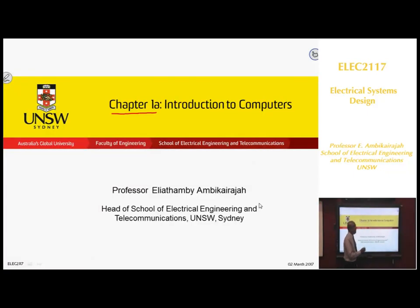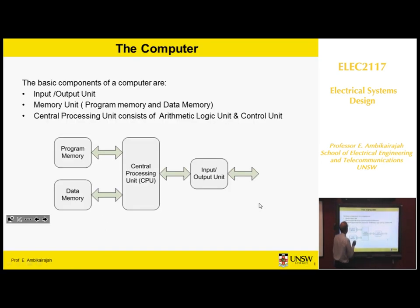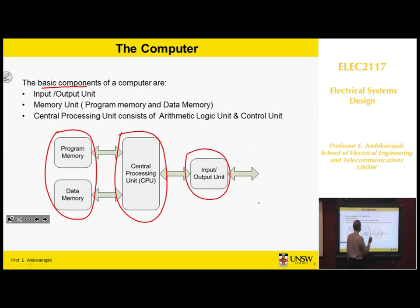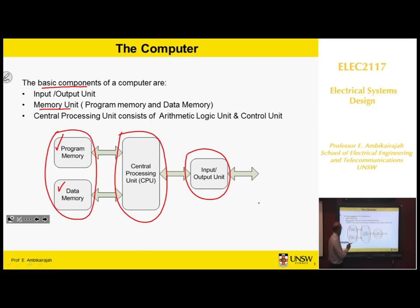Chapter 1a deals with a basic introduction to computers. The basic components of a computer are the memory unit, the central processing unit where arithmetic, logic calculation and control are done, and then the input/output unit. The memory unit can be divided into two: one is the program memory and the other is the data memory. We'll look further at the types of memories and what sort of information they hold.